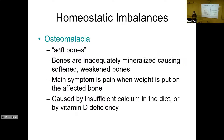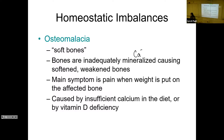The last couple of imbalances affect bones but are not broken bones — they affect bone growth or development. One is called osteomalacia, which means soft bones. This occurs whenever bones are not mineralized enough — remember the mineral in our bone is calcium. Basically, when you don't have enough calcium in your bones they're going to be soft and weaker. The main symptom is pain when you put weight on weight-bearing bones like the legs, and the legs often bow out. It is typically caused by an insufficiency of calcium or vitamin D.